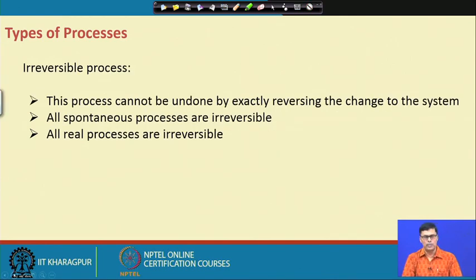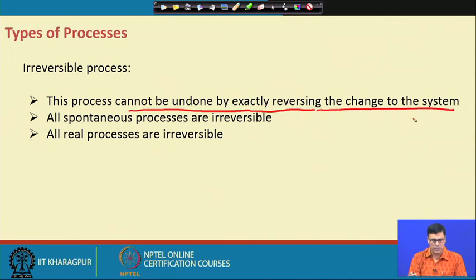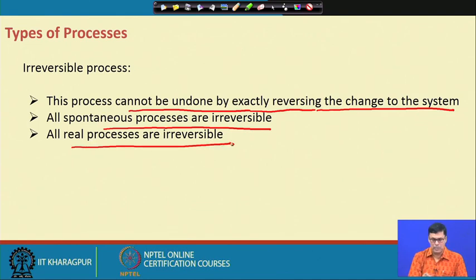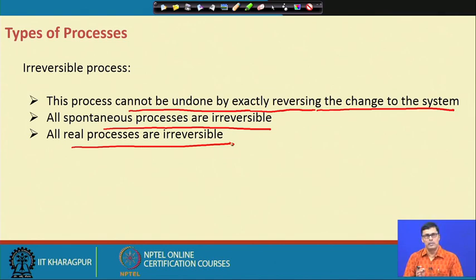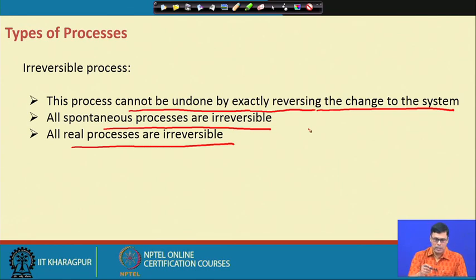An irreversible process cannot be undone by exactly reversing the changes of the system. All spontaneous processes are irreversible, and all real processes are irreversible. Irreversible means unidirectional, while reversible means bidirectional. This process cannot be undone by exactly reversing the change of the system — that is why we call it an irreversible process.